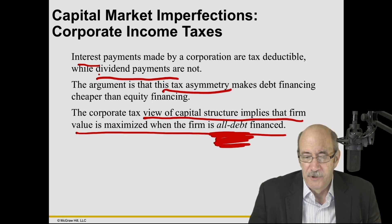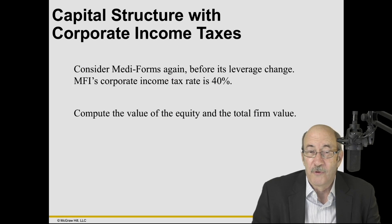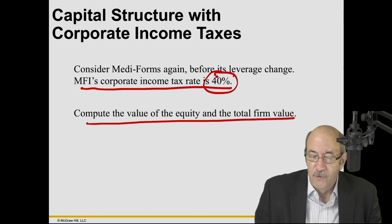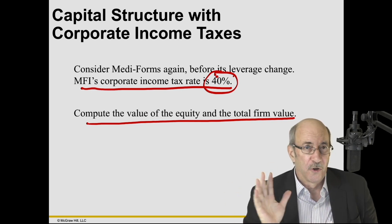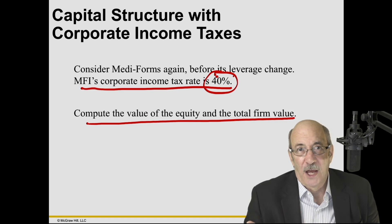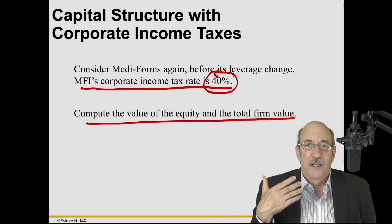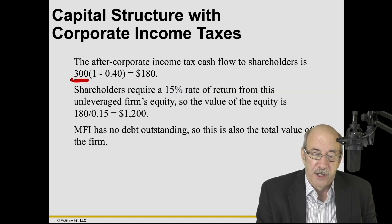The corporate tax view of capital structure implies that firm value is maximized when the firm is all debt — or 99% debt, 1% equity. Let's prove that. MFI has a corporate tax rate of 40%. We're going to compute the value of equity and total value of the firm. We'll take the leverage away and look at the all-equity firm with taxes, then add leverage. With our $300 cash flow, 40% goes to Uncle Sam, so what's left is 60% — $180. Shareholders require 15% return, so $180 divided by 15% gives a firm value of $1,200, not $2,000. $800 of it goes to the federal government.